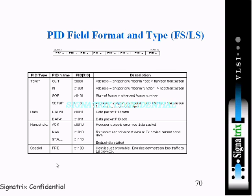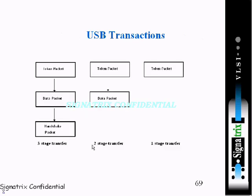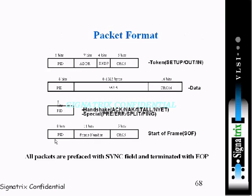Now let's look at the PID field format and types for full speed and low speed. We can see the PID type, PID name, and description. The PID is included in each packet type — as we've already seen in the earlier slides, it is associated with the token, data, and handshake packets.